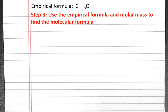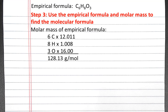Now I can use the empirical formula and the molar mass given in the problem to find the molecular formula. First, I'll calculate the molar mass of the empirical formula. There are 6 carbon atoms, 8 hydrogen atoms, and 3 oxygen atoms in the empirical formula. So the molar mass is 128.13 grams per mole.